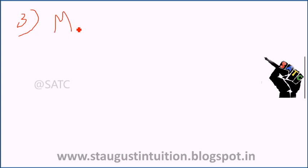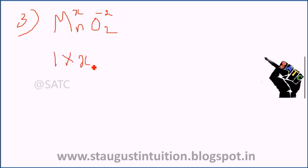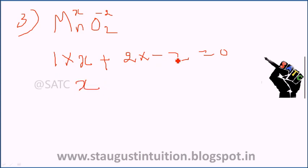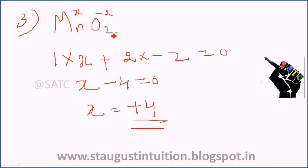Third question: MnO2. Let Mn = x. x plus 2 × (−2) = 0, so x − 4 = 0, therefore x = +4. The oxidation state of Mn in MnO2 is +4.